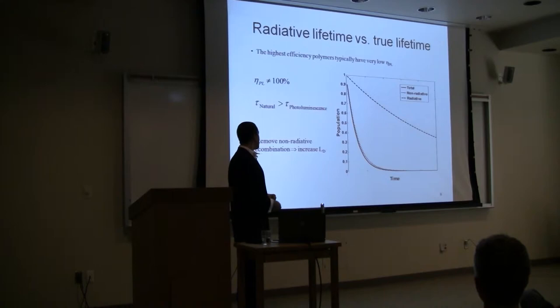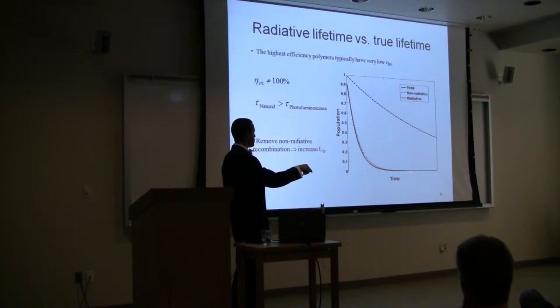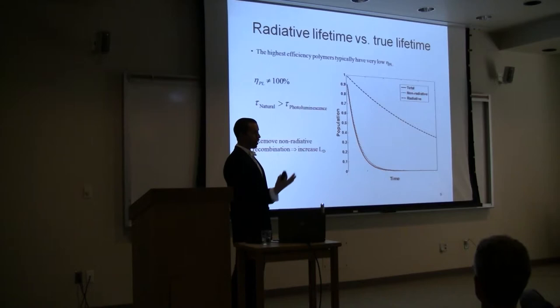As I've shown here, if you look at the rates of different processes, this one here would be the ideal radiative recombination rate. This is the rate of some non-radiative recombination process. If you look at the total lifetime of the exciton, because of these two recombination processes that are competing, we'd get this rate curve here, which is much shorter lifetime than the ideal natural lifetime of the exciton, the amount of time it would take for it to emit light and recombine on its own.